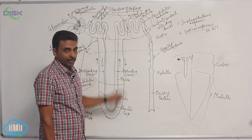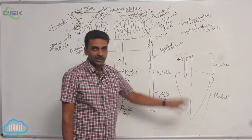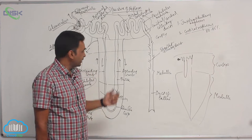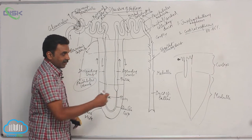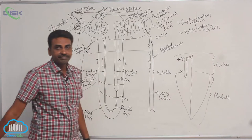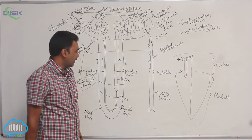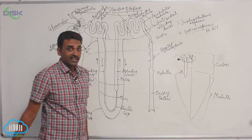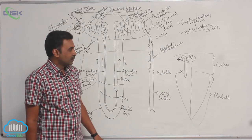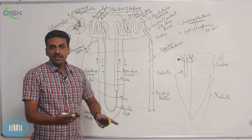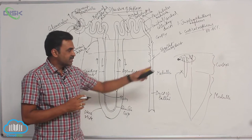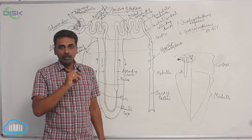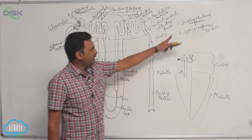For cortical nephrons, the Henle's loop is short — it is not very long. The vasa recta is absent; the blood supply is through the peritubular network only. Where there is no vasa recta, there is no concentration of urine, which means these nephrons are useful mostly for filtration.